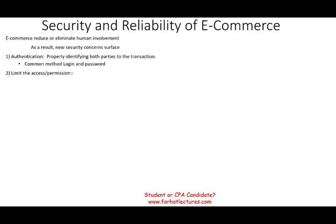A second concern is limiting access or permissions of the user. For example, in the case of extranet, you want to make sure users are not accessing information they should not have access to — such as your customer database. You also want to limit how much the other party can order if they have access to your extranet, and control who is authorized to do so. That is limiting access and permissions.